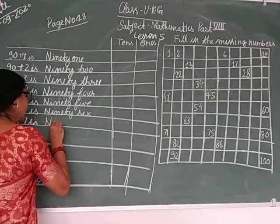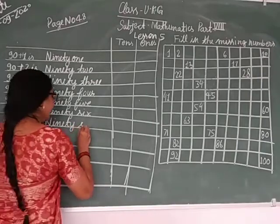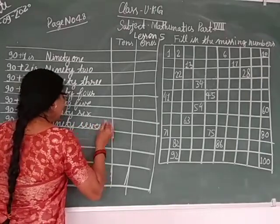It's calling it ninety, N-I-N-E-T-Y, S-E-V-E-N. 97.